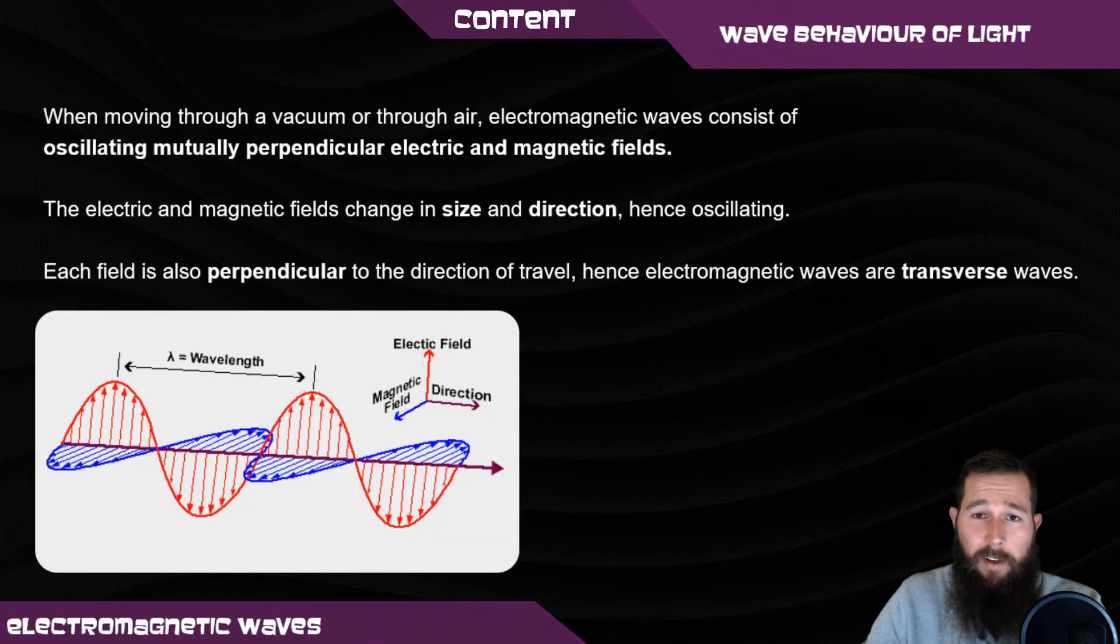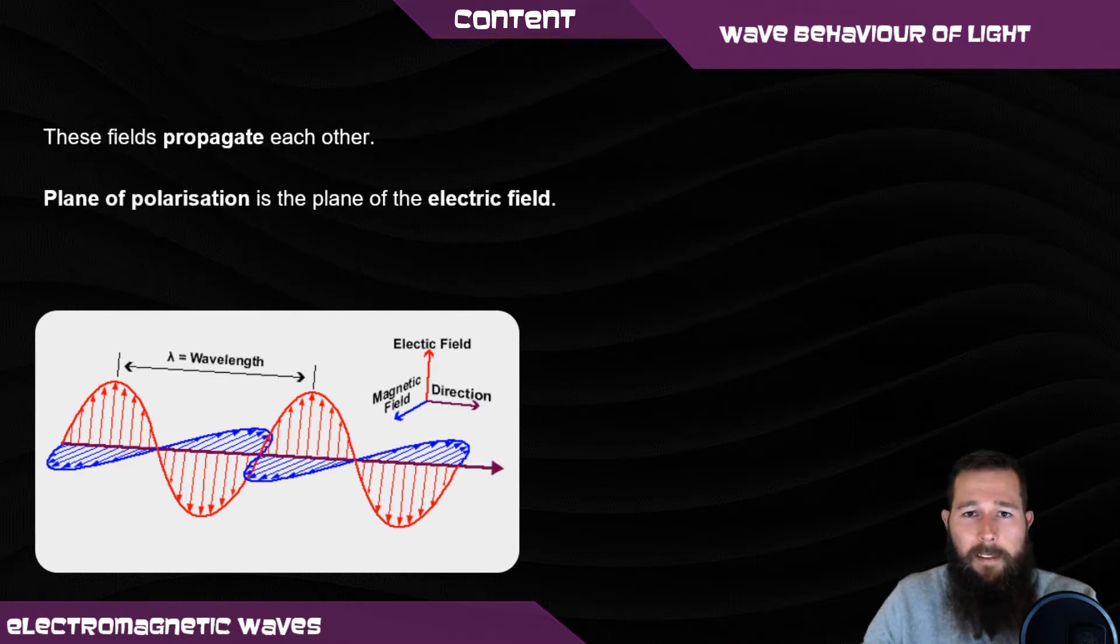Now these electric and magnetic fields are perpendicular to each other and they oscillate, meaning they change in magnitude and direction. The oscillation of these fields is also at right angles to the direction of travel. When you've got waves that oscillate in a direction that's perpendicular to the travel, these are called transverse waves. The electric field propagates and creates a magnetic field, and the magnetic field creates an electric field, so these propagate each other and the radiation just keeps going.